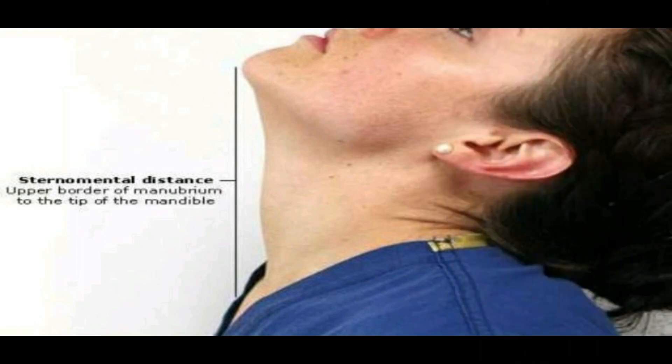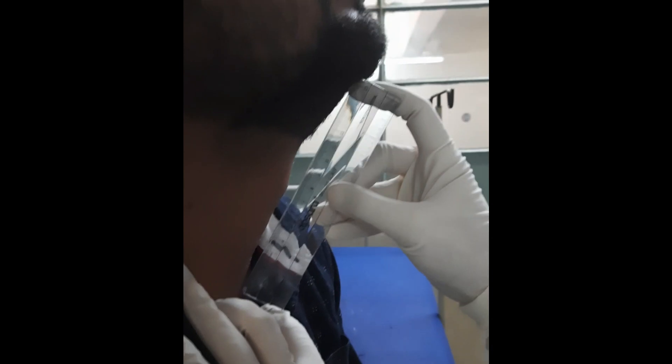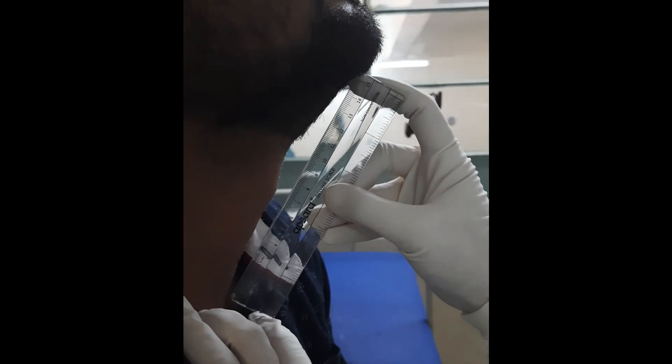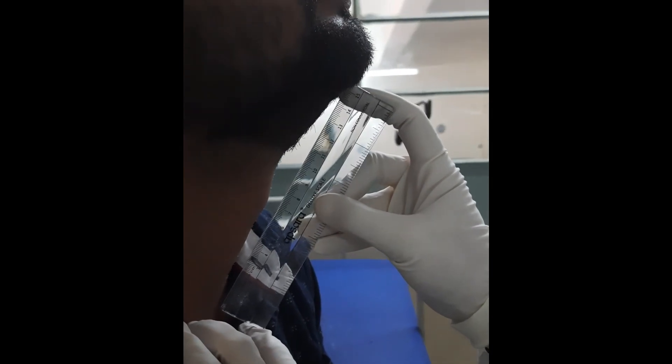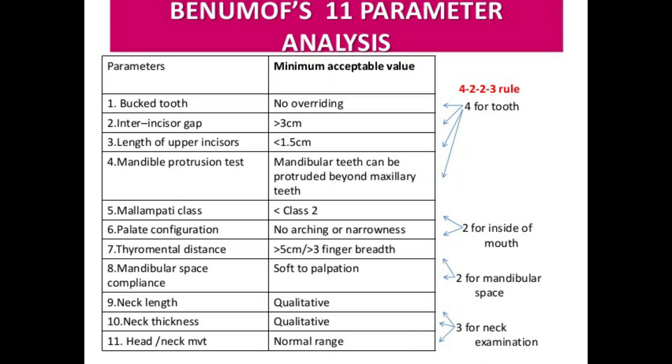Sternomental distance is measured between the sternal notch and the tip of the chin with head in full extension and mouth closed. A distance of less than or equal to 12.5 cm is associated with difficult intubation. Using group indices — i.e., multiple parameters — enhances the sensitivity of predicting difficult laryngoscopy and intubation.